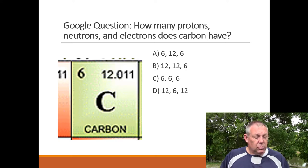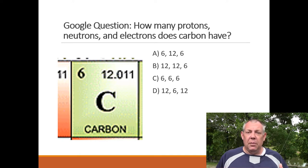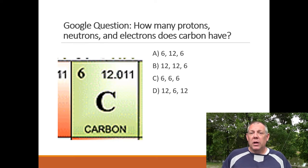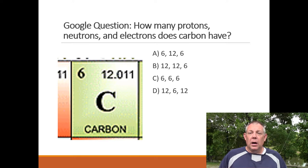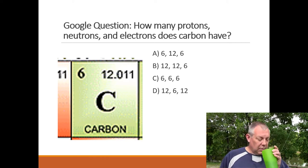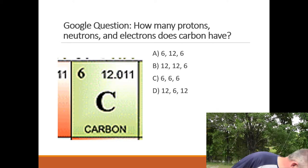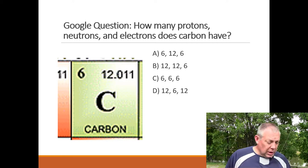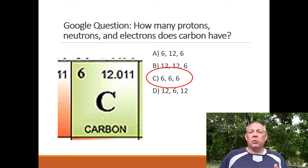Periodically throughout these lectures I'll throw out questions — play along and see if you can answer before I give you the answer. Simple question: how many protons, electrons, and neutrons does carbon have? Here's carbon's entry in the periodic table. The correct answer is C: it has six protons, six neutrons, and six electrons.